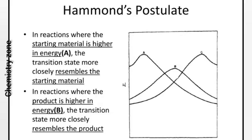Understanding Hammond's Postulate with the help of a reaction coordinate: in a reaction where the starting material is higher in energy, the transition state more closely resembles the starting material — starting material represents the reactant. In a reaction where the product is higher in energy, the transition state more closely resembles the product.